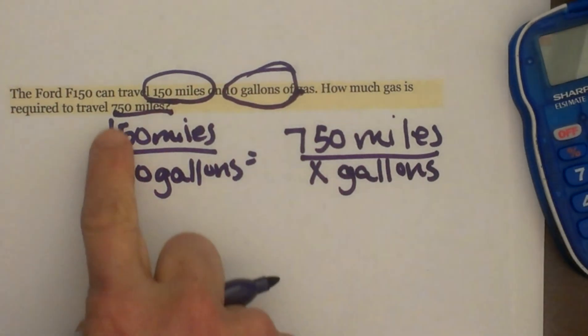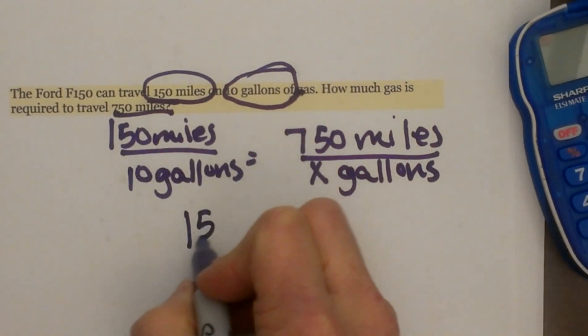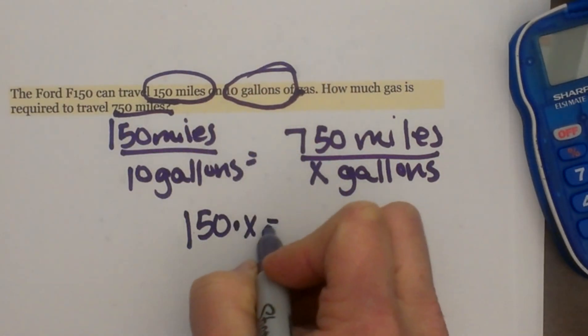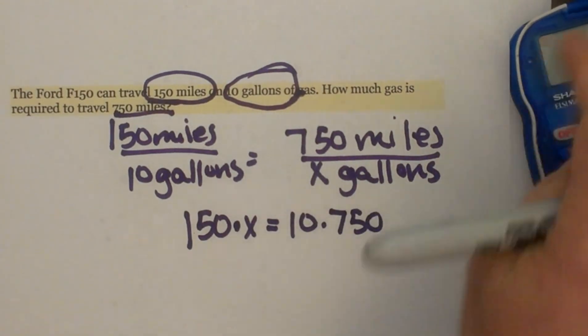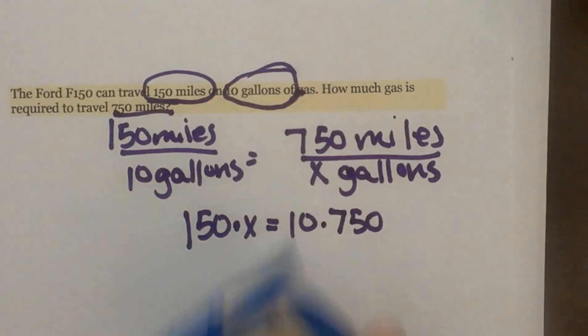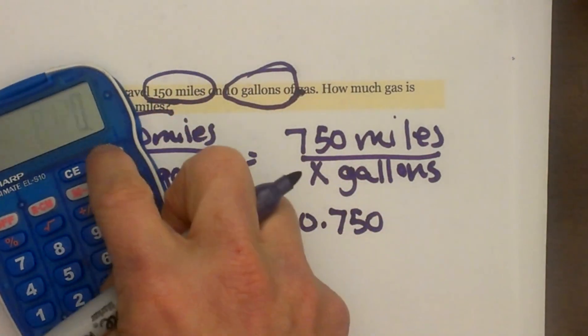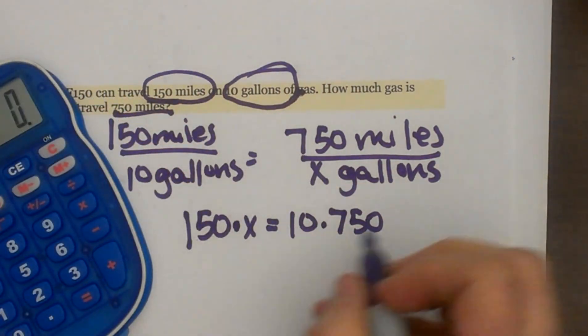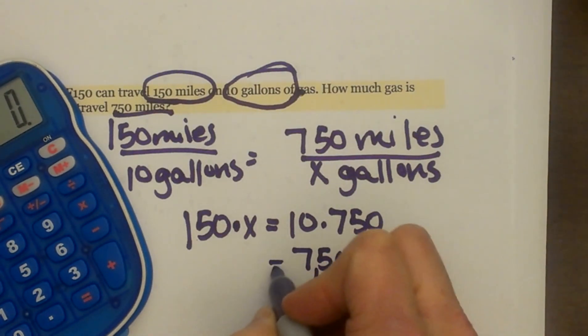Now let's do our cross product 150 times x so 150x is equal to 10 times 750. Okay, grab your calculators. So 750 times 10, that's just 7,500 is equal to 150x.